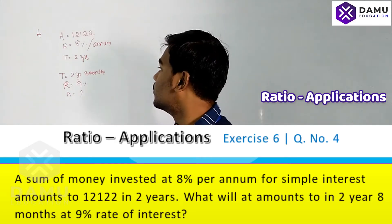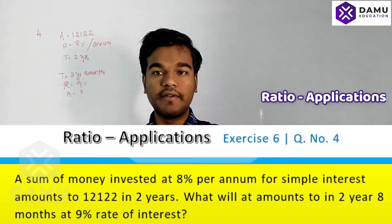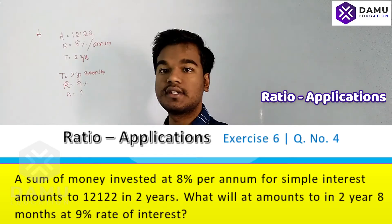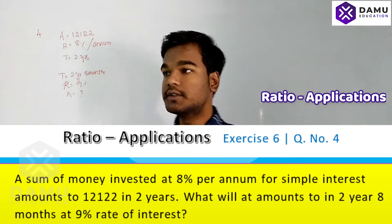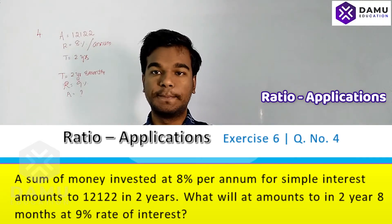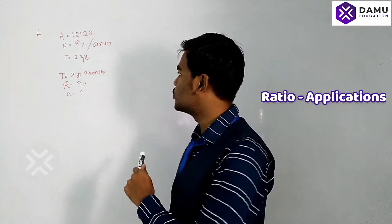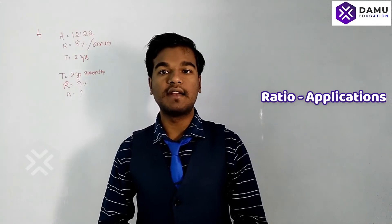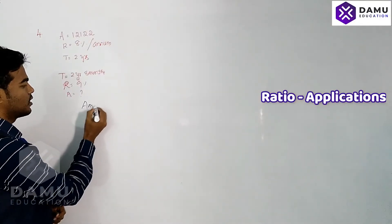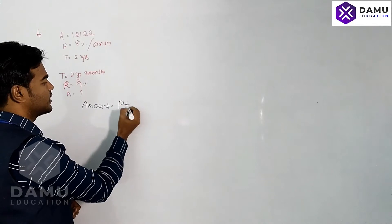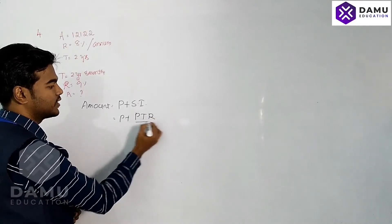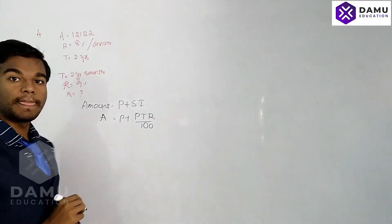Then, what amount will we get if the same investment is made for two years and eight months at a rate of interest of 9% per annum? From the first given values, we calculate the principal. That principal will then be substituted to calculate the amount. The formula is: Amount = Principal + Simple Interest, where Simple Interest = PTR/100.